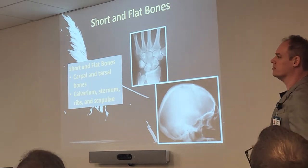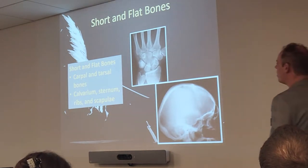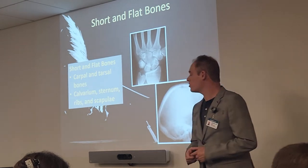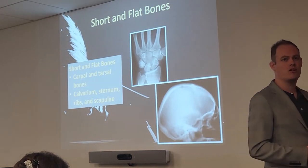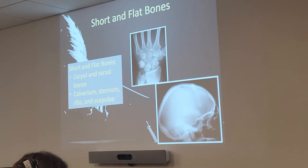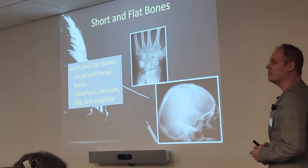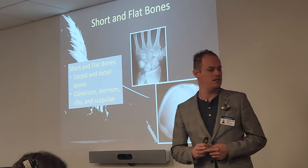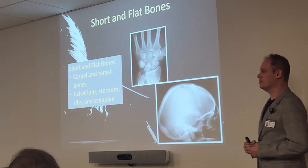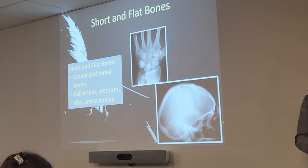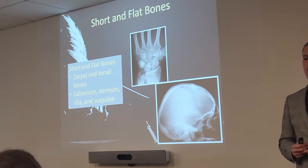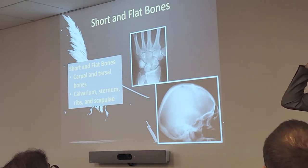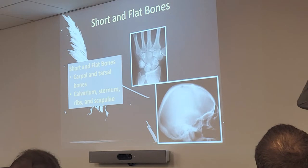Short and flat bones: carpal and tarsal bones are our short bones specifically. The flat bones are going to be what we call the calvarium, the sternum, the ribs, and the scapula. The calvarium is the area of your skull — pretty much the sides and top of your skull, which is very flat and rounded.